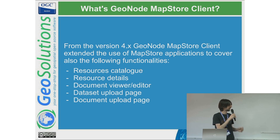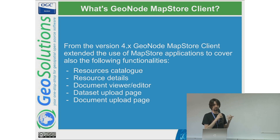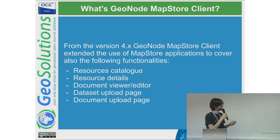When we moved to version 4, with the new API we also worked to enhance the home page and the catalog page, to display details directly in the catalogue without switching between pages, and adding a document viewer and upload through new interfaces.